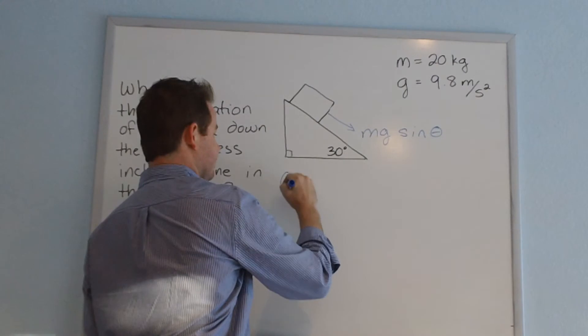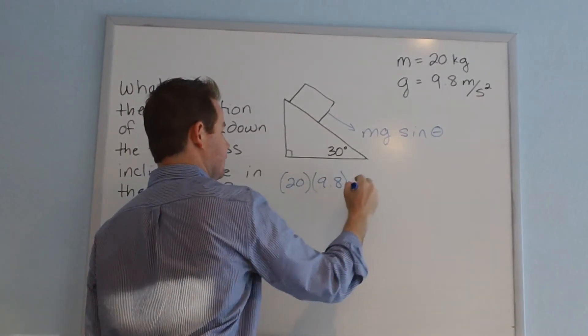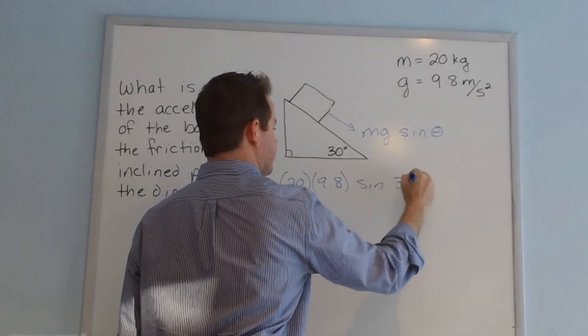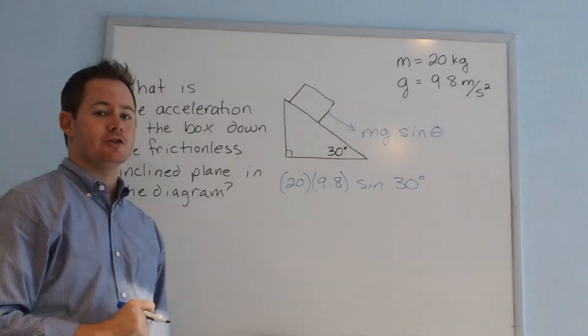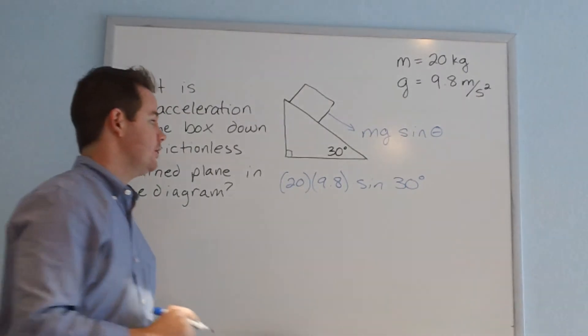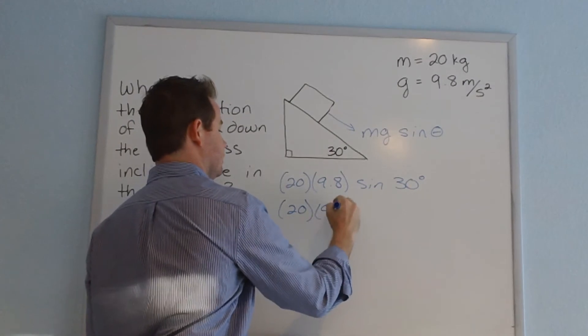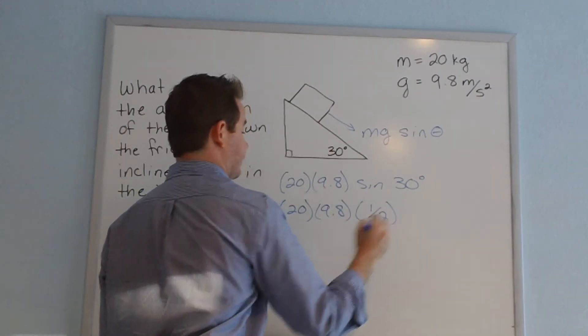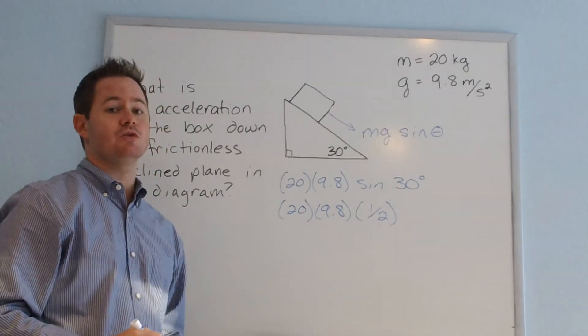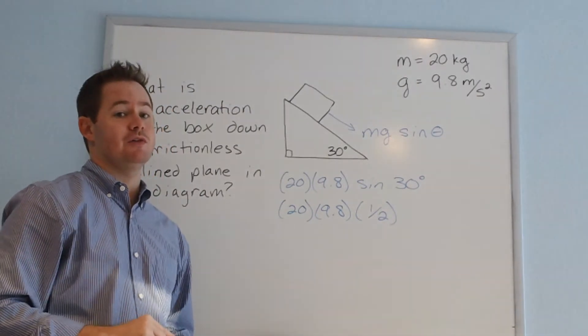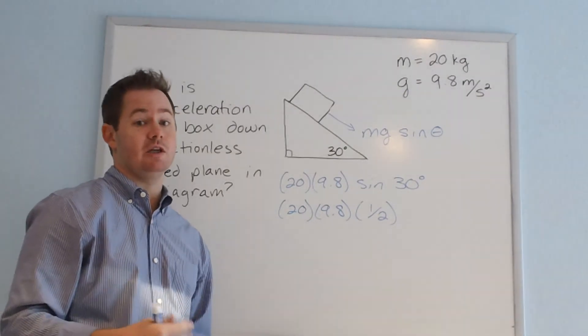In this case, if we plug in our values, we have 20 times 9.8 times the sine of 30 degrees. If we know our unit circle well, then we know that the sine of 30 degrees equals one-half. If we're not as familiar with the unit circle, it is worth memorizing for physics because those values get used very regularly in physics problems.